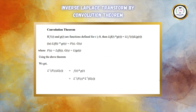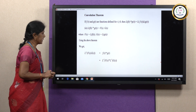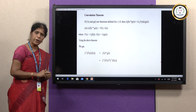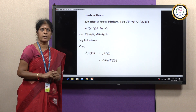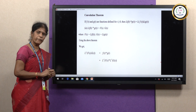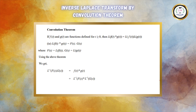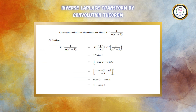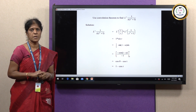Next, using the convolution theorem, we are going to define the inverse Laplace transform. Here, L⁻¹{F(s)·G(s)} is nothing but f(t) * g(t), where f(t) = L⁻¹{F(s)} and g(t) = L⁻¹{G(s)}. So, the convolution theorem for the inverse Laplace transform states: L⁻¹{F(s)·G(s)} = f(t) * g(t) = L⁻¹{F(s)} * L⁻¹{G(s)}. Next, we are going to use this to find the inverse Laplace transform.